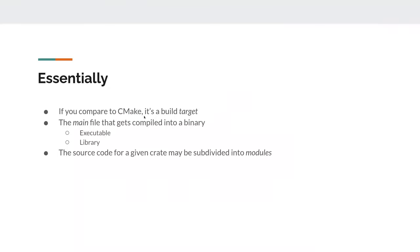Essentially if you compare to CMake it's a build target. The main file gets compiled to a binary — it can be an executable or a library — and the source code for any given crate can be subdivided into modules.